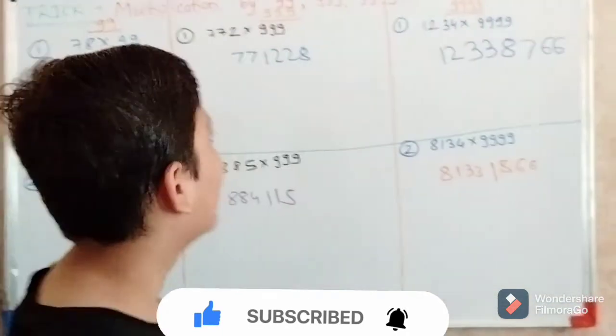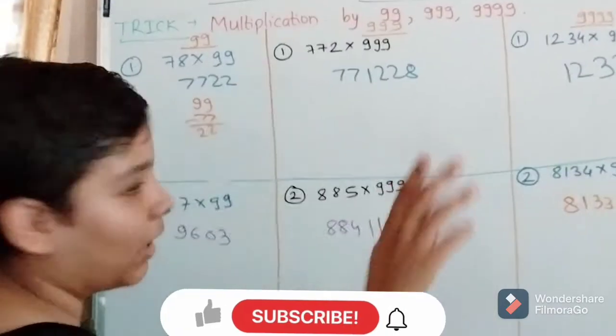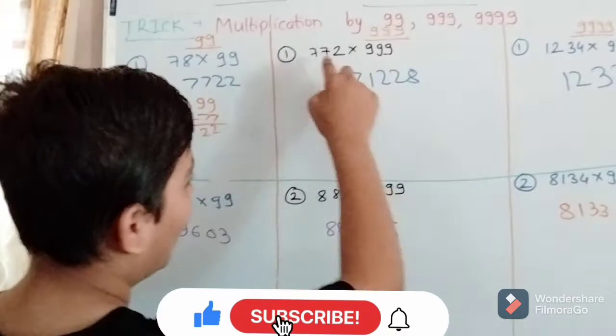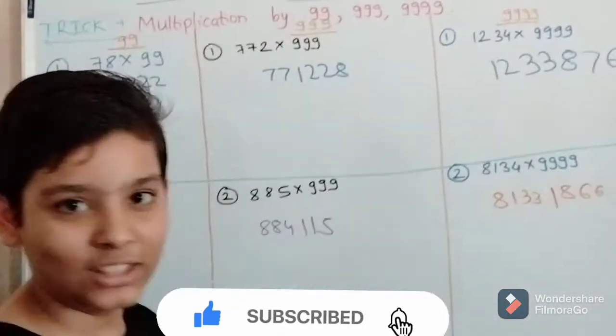And I will tell you that this is just applicable to 99, meaning if 99 is equal to 2 digits, 999 is equal to 3 digits, and 9999 is equal to 4 digits.